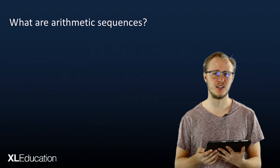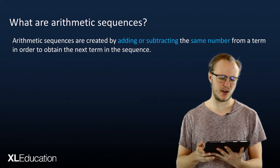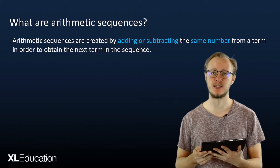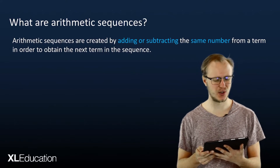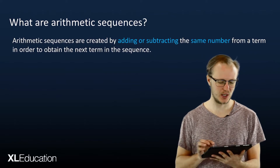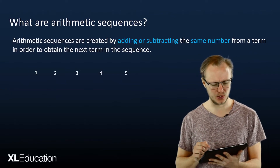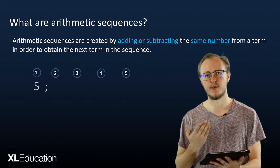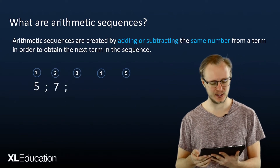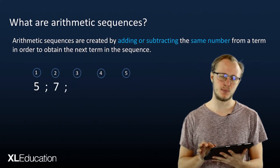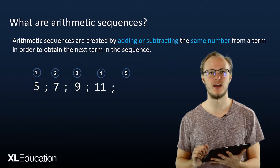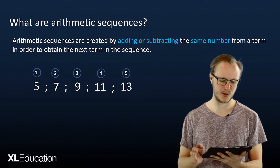What are arithmetic sequences? Arithmetic sequences are created by adding or subtracting the same number from a term in order to obtain the next term in the sequence. Let's make our own one. Let's start with five and add two. So five plus two is seven, seven plus two is nine, nine plus two is eleven, and eleven plus two is thirteen.